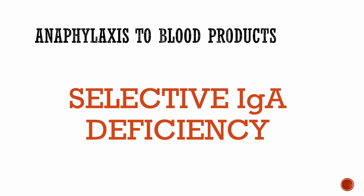Let's look at an important association. Anytime you see anaphylaxis to blood products, think about selective IgA deficiency. Selective IgA deficiency is one of the most common reasons you get anaphylaxis to blood products.